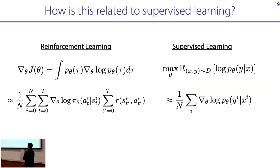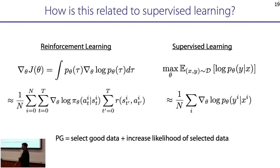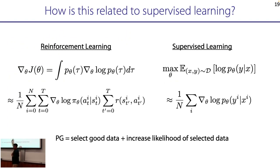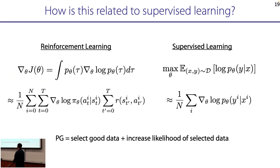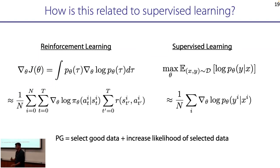How is this related to supervised learning? It's basically just reward-weighted supervised learning. The expressions look very similar — you're just re-weighting things according to your reward. You'd implement it with cross-entropy loss or max-likelihood estimation, looking very similar to supervised learning but weighted, and with iterative data collection.